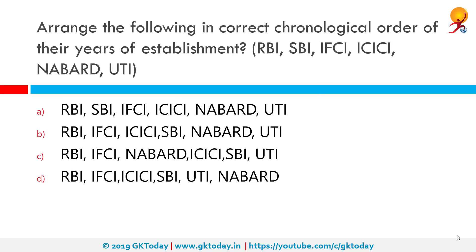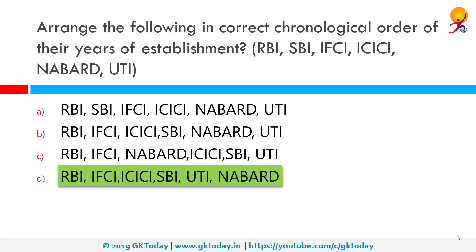Arrange the following in correct chronological order of their years of establishment: RBI, SBI, IFCI, ICICI, NABARD and UTI. The correct arrangement is option D: RBI was formed in 1935, IFCI in 1948, ICICI in 1955, SBI and UTI in 1964, and NABARD in 1982.